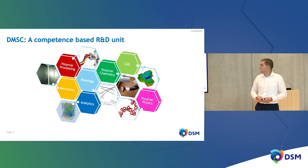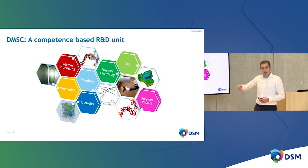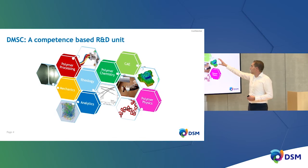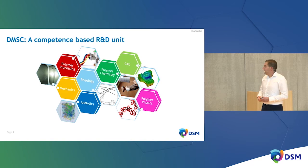The DSM Material Science Center is a competence-based R&D unit, meaning we maintain and invest in different competencies needed to answer questions from the business. If you take engineering plastics as an example: to make a polymer you need polymer chemistry; to make something from it you need polymer processing — compounding and injection molding; eventually to test it you need mechanics; and finally real part simulations — CAE computations on real parts.